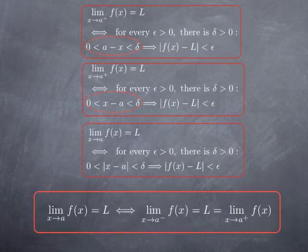And you see that that means that the limit of f of x at a in the usual sense is L exactly when both one-sided limits exist, the limit from the left and from the right, and are equal to L.